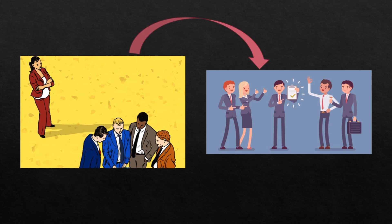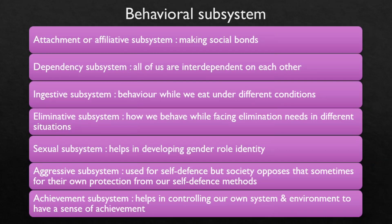So we are done with the seven subsystems of Dorothy Johnson's Behavioral System Theory: attachment or affiliative subsystem for making social bonds; dependency subsystem showing we are all interdependent; ingestive subsystem about behavior while eating under different conditions; eliminative subsystem about behavior when facing elimination needs; sexual subsystem for developing gender role identity; aggressive subsystem for self-defense, though society sometimes opposes it; and achievement subsystem for controlling our system and environment to gain a sense of achievement. If you like this video, please like, share, and subscribe to my channel. Thank you for watching.